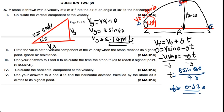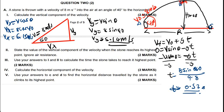Part four is saying: calculate the horizontal component of the velocity. That is just VX. VX equals V cos theta, so VX equals 8 cos 40, which gives 6.13 meters per second. That is my VX.